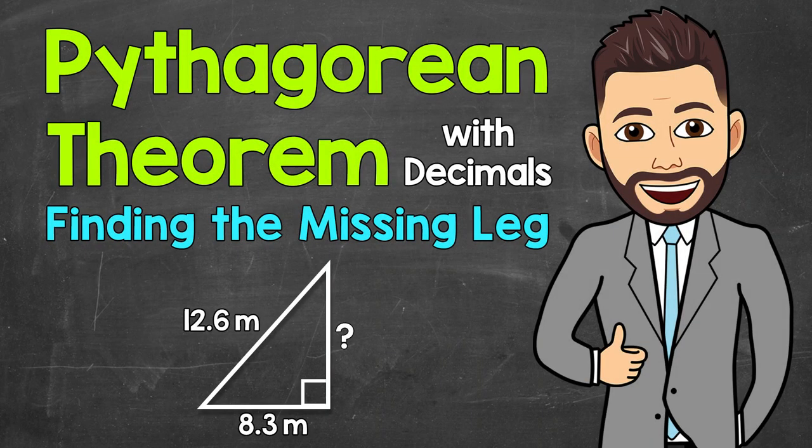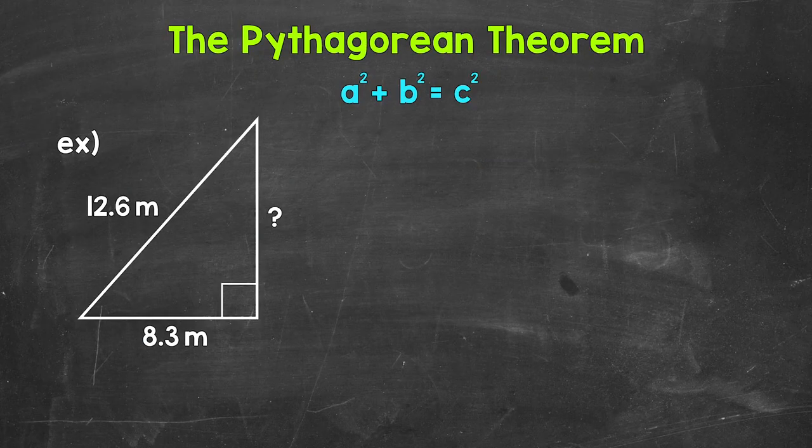Welcome to Math with Mr. J. In this video, I'm going to cover how to find the length of a missing leg of a right triangle using the Pythagorean theorem, and we're going to be working with decimal side lengths.